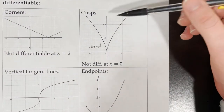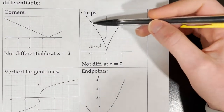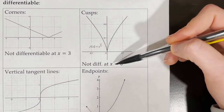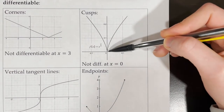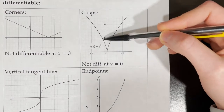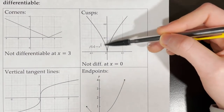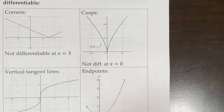Another situation is when we have what's called a cusp, and that looks like this. It is not differentiable at x equals 0 because even though it is continuous and the pieces do line up, the slope of the tangent line from the left is not the same as the slope of the tangent line from the right.